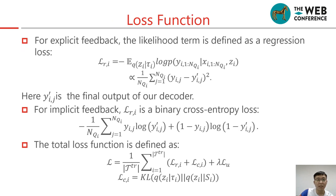For explicit feedback, the likelihood term is defined as a regression loss. For implicit feedback, it is a binary cross-entropy loss. The total loss function is defined as follows.